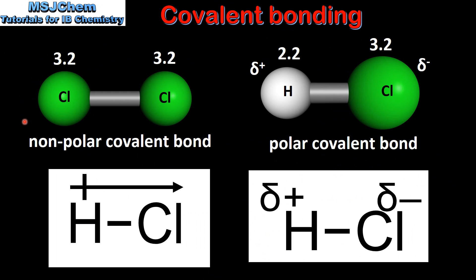And finally we look at non-polar and polar covalent bonds. In a previous video we saw that non-polar covalent bonds have a difference in electronegativity between 0 and 0.4 units. The difference in electronegativity between these two chlorine atoms is 0, therefore this is a non-polar covalent bond. In hydrogen chloride, the difference in electronegativity between the hydrogen atom and the chlorine atom is 1 unit, therefore this is a polar covalent bond.